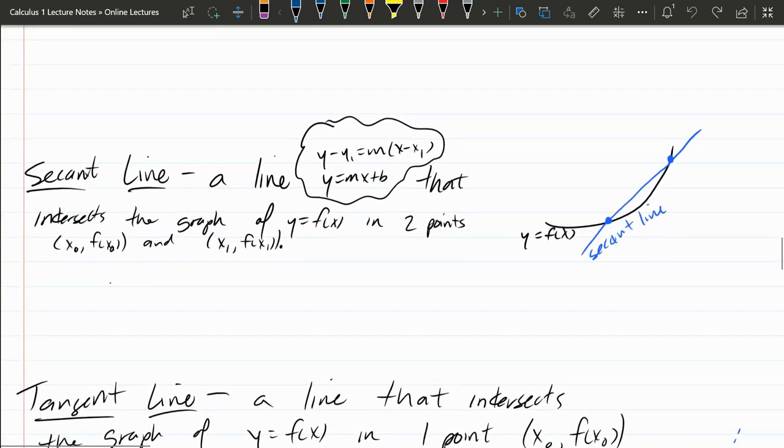Now a secant line is a line, and here I have the point-slope form and the slope-intercept form. Generally in calculus, I recommend using point-slope form. It's a little bit more useful. You usually don't have the y-intercept, which is why I try to avoid the slope-intercept form. So again, this is point-slope form, and generally in calculus is going to be better.